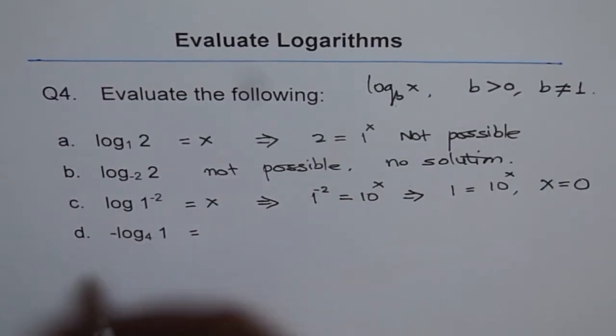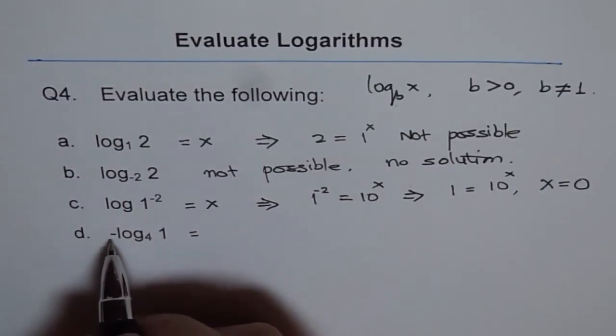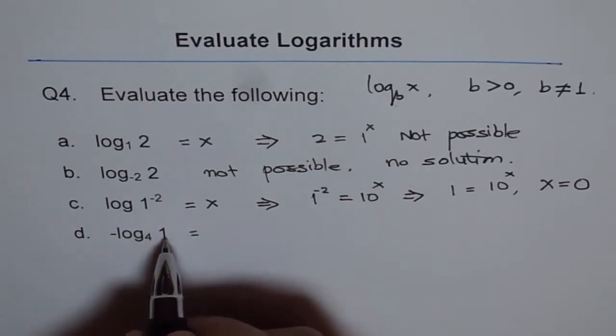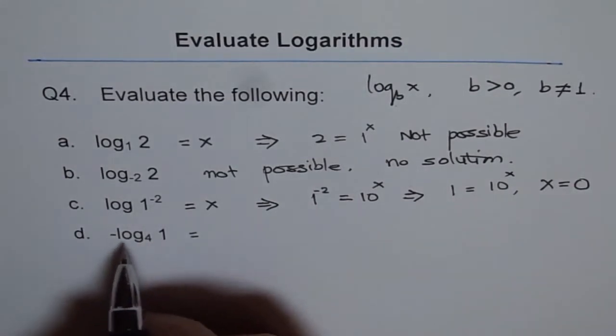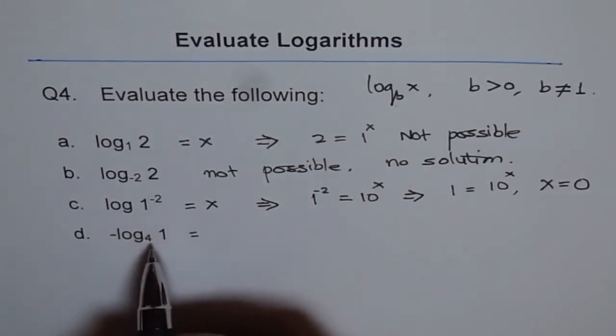Next one. So we have -log to the base 4 of 1. So it is minus. But log to any base of 1, we learned just now, is 0.